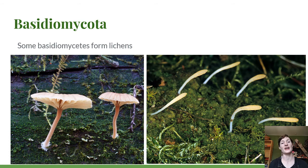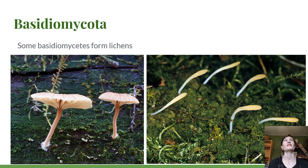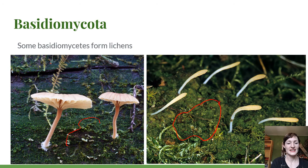Some basidiomycetes form lichens. Most lichens are formed with an ascomycete, but here are a few unusual ones formed with a basidiomycete. On the left is Lichenomphalia, which makes a cute little umbrella-shaped mushroom. On the right is a lichen that forms with a club fungus — Multiclavula — making small regularly-spaced clubs. The rest of the lichen is the green slime you see, which is the algae and some hyphal filaments all wrapped together.